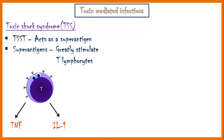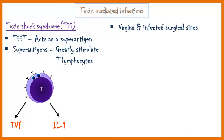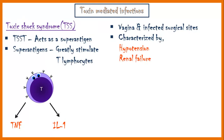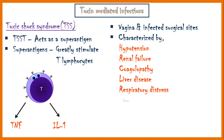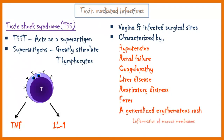TSS can be caused by growth of staph in many sites; most common sites include the vagina and infected surgical sites. Characteristic features of TSS include hypotension, renal failure, coagulopathy, liver disease, respiratory distress, fever, a generalized erythematous rash, inflammation of mucous membranes, and vomiting.